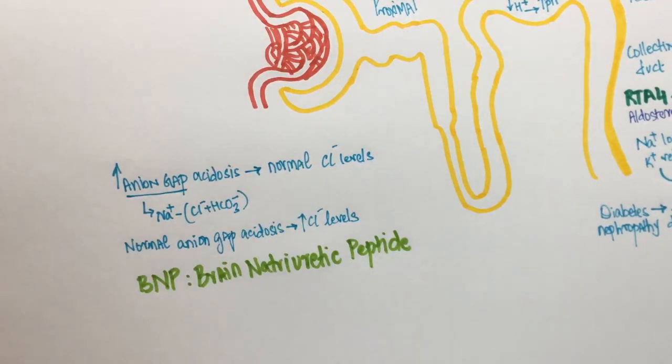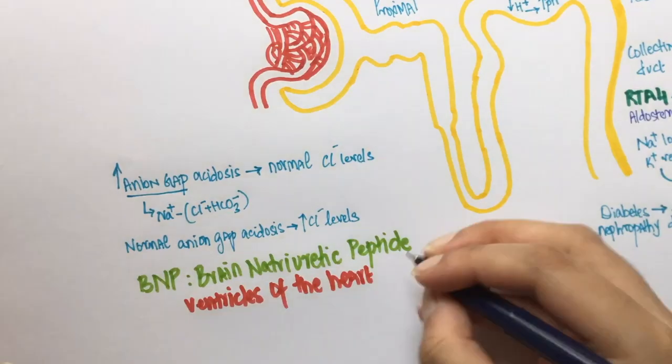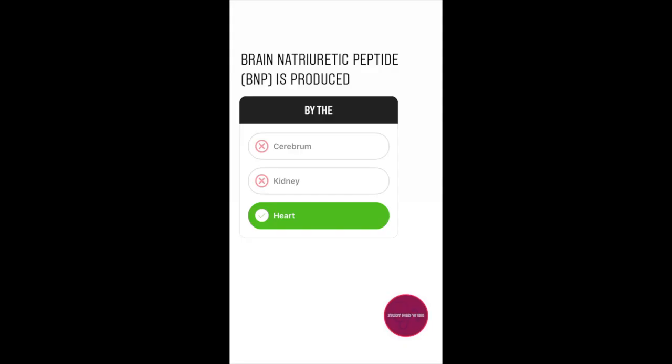Brain natriuretic peptide is produced by the ventricles of the heart. This is secreted when there is fluid overload like in the case of congestive heart failure. Brain natriuretic peptide promotes sodium and fluid loss in order to combat the fluid retention in such conditions.